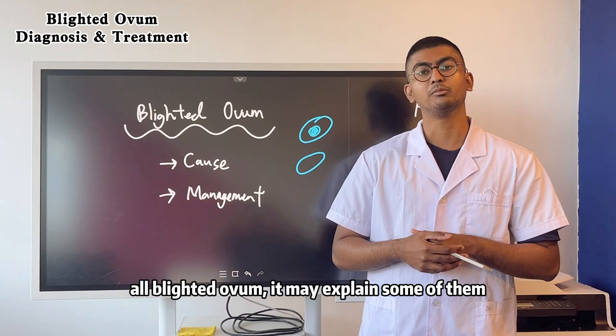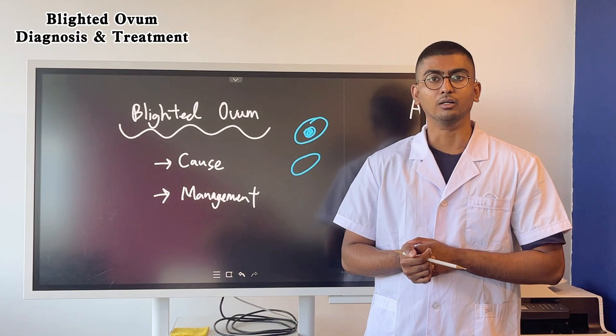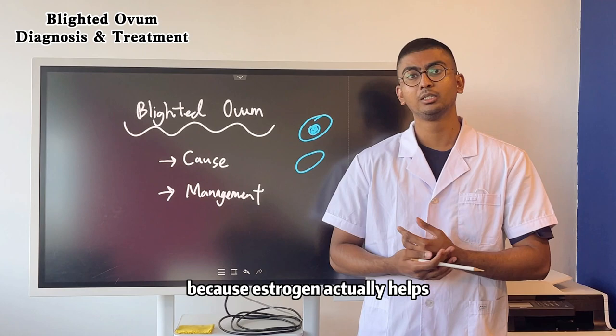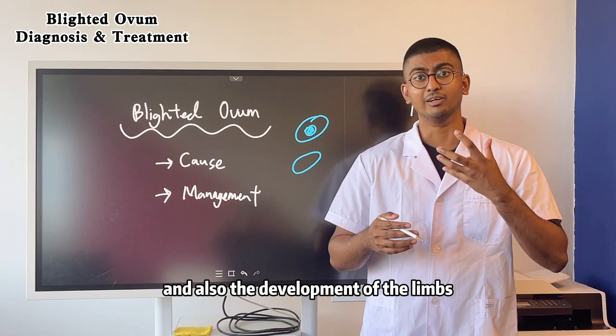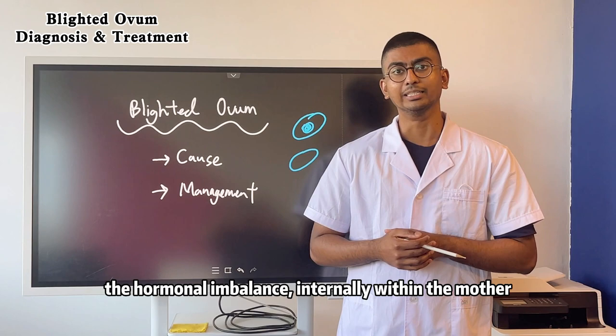Here at our hospital, looking at our history of dealing with patients with blighted ovums over the past 20 years, we've realized that they share a very distinct root cause: very low levels of estrogen. We believe this low estrogen is actually what's causing blighted ovum, because estrogen plays a key role in developing blood vessels, kick-starting embryogenesis, and the development of the baby's limbs and organs. These patients have low estrogen levels, so we believe the root cause is a hormonal imbalance within the mother.